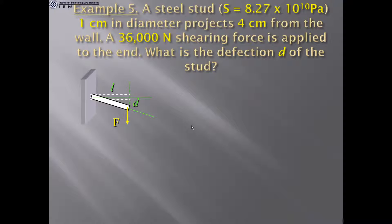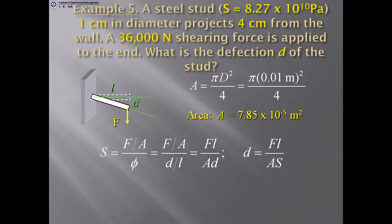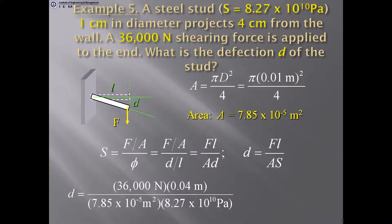Example: A steel stud with S = 8.27 × 10¹⁰ Pascal, 1 cm in diameter, projects 4 cm from the wall. A 36,000 Newton shearing force is applied. Find the deflection D. Cross-sectional area A = 7.85 × 10⁻⁵ m². Using S = (F/A) / (D/L), rearranging gives D = FL / (A · S). Substituting all values gives D = 0.222 mm.